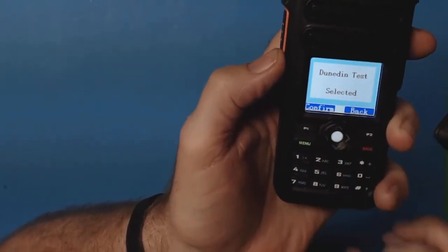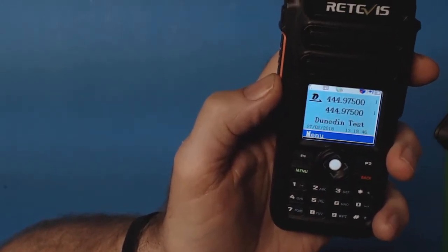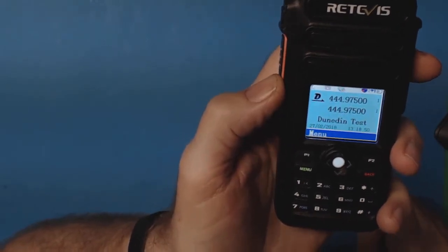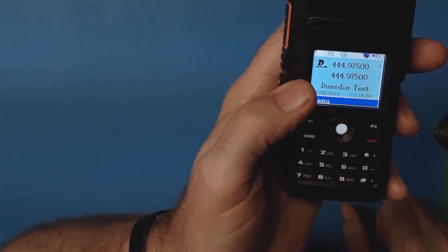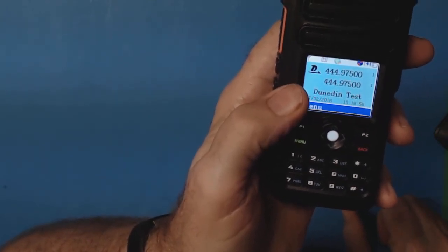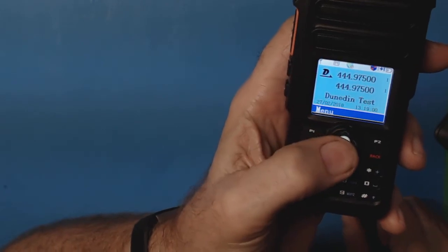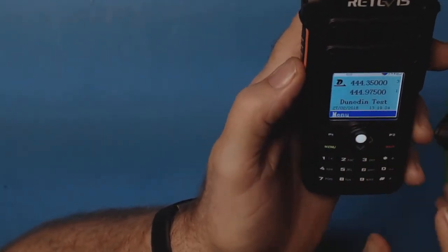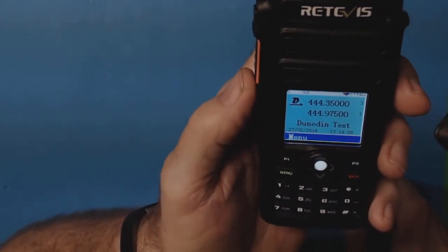Menu, Zones, Zone List, Dunedin Test, and then I have to turn it on. It's now on Dunedin Test site and it tells me I'm on group one. I think I want to be on group three on this repeater, which is TAC 310, which is nationwide. Let's go to three, and then I'll see if I can make it. I'm going to tilt the radio back up.